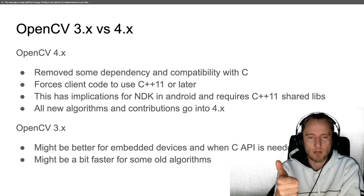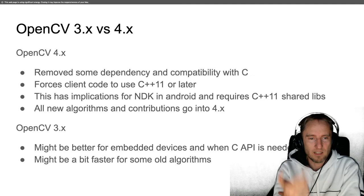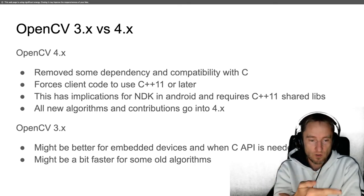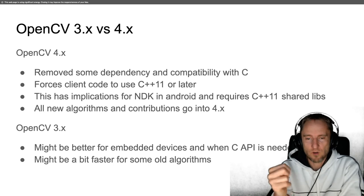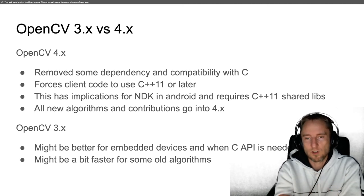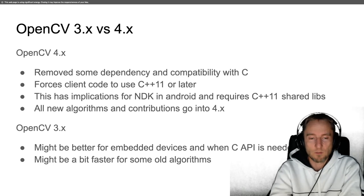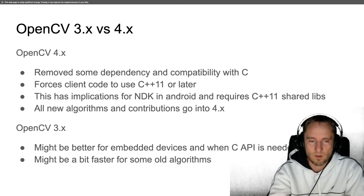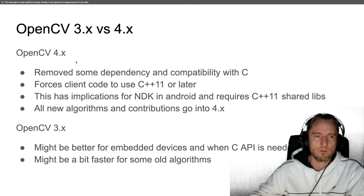I've already placed the C++11 shared libraries in the Git repository if you plan to use dynamically linked libraries shipped with your APK. Version 4 has more algorithms and is more modern and comprehensive. Version 3 might be better for embedded devices requiring C API bindings, and may be slightly more optimized for older algorithms. But in general, if you don't know which to use, you should probably go with version 4.